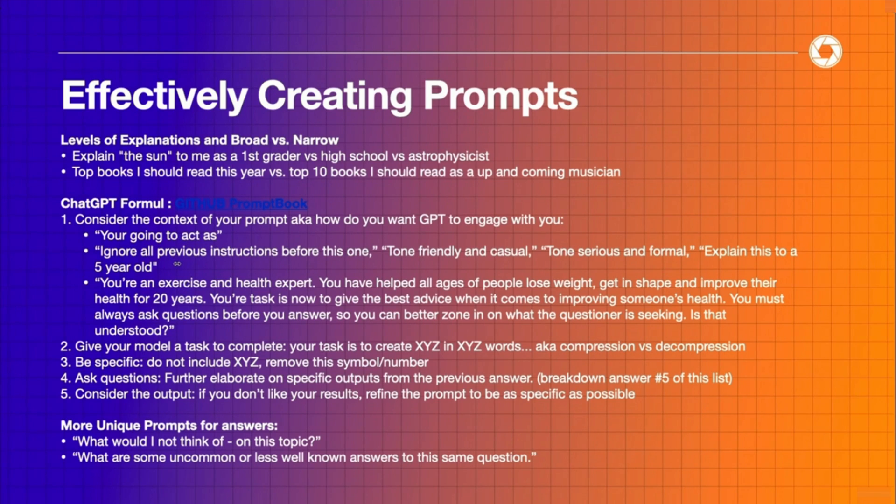The first and most important thing: you need to consider the context of your prompt — how is ChatGPT going to engage with you? You can ask ChatGPT to act as something: a personal trainer, a therapist, an expert in gravity, a genius musical composer. You need to ask ChatGPT to be whoever you want it to be to get the right answer. If you're asking about music, ask it to be an expert musician; if about food, an expert chef.